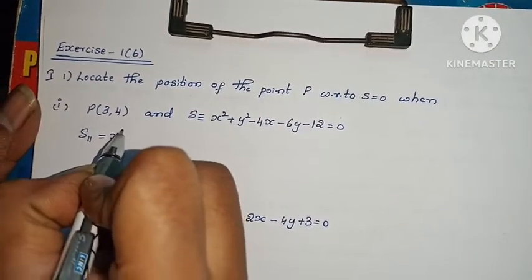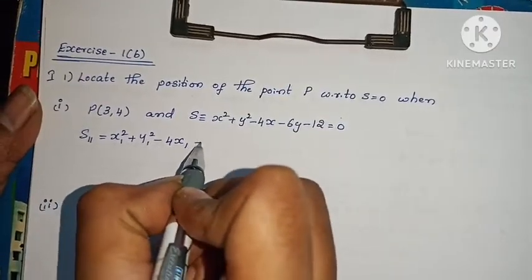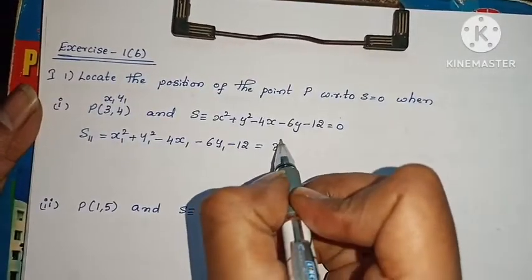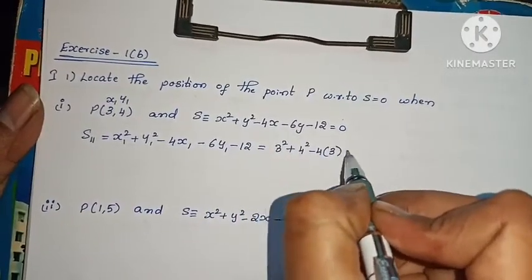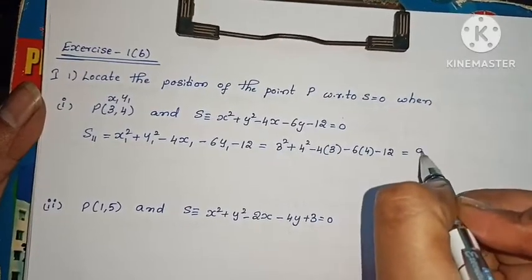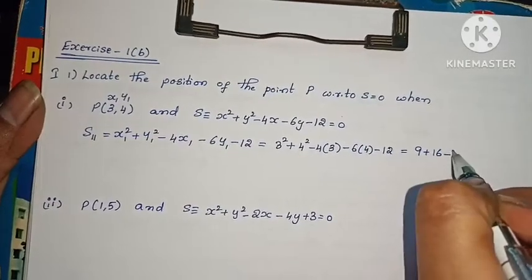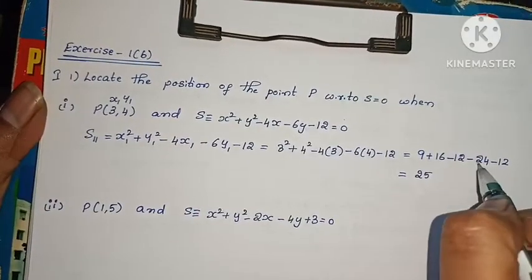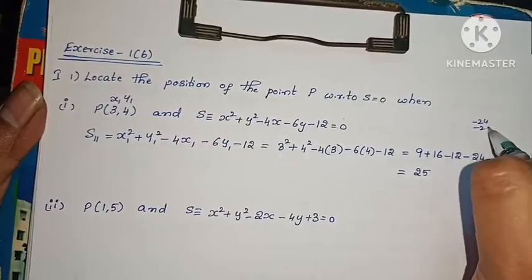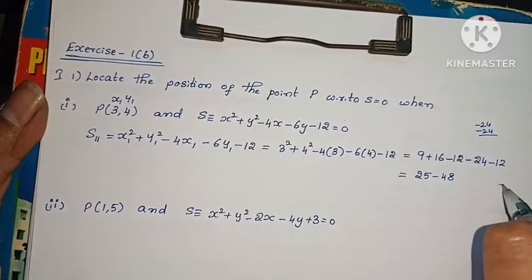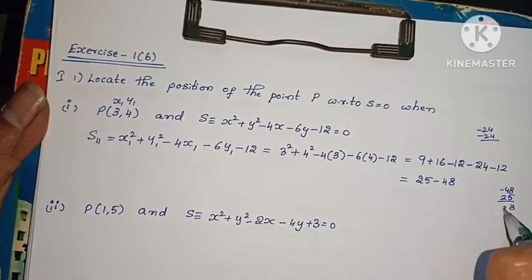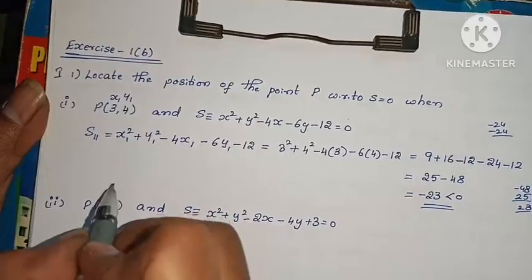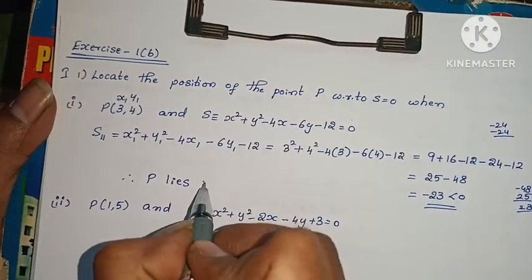To locate the position, we find S11. S11 = x1 squared plus y1 squared minus 4x1 minus 6y1 minus 12. Substituting x1=3, y1=4: 3 squared plus 4 squared minus 4 into 3 minus 6 into 4 minus 12 = 9 plus 16 minus 12 minus 24 minus 12.